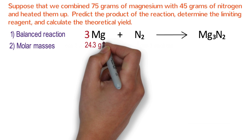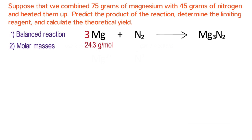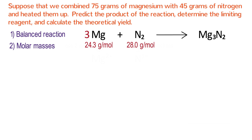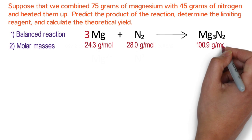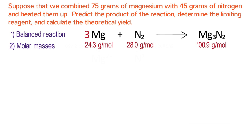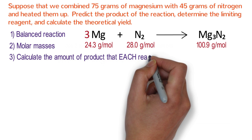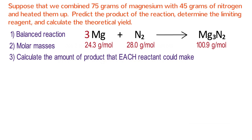Next, write down the molar masses of all reactants and products. Magnesium is 24.3 g/mol, nitrogen (N₂) is 28 g/mol, and magnesium nitride (Mg₃N₂) is 100.9 g/mol. To determine both the limiting reactant and the theoretical yield, we calculate the amount of product each reactant could make. The smallest amount of product is the theoretical yield, and the reactant producing that smallest amount is the limiting reagent.